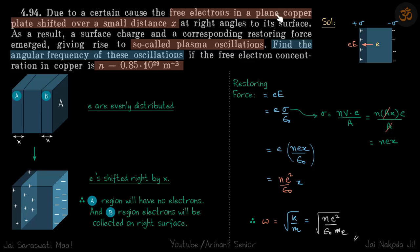We have free electrons in a plain copper plate that get shifted over a small distance x at right angles to its surface. As a result, surface charge and corresponding restoring force emerge, giving rise to so-called plasma oscillations. Find the angular frequency of these oscillations if the free electron density is given.